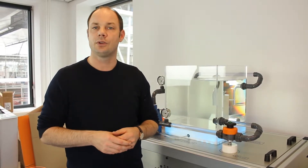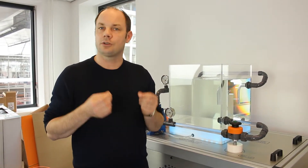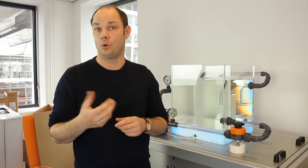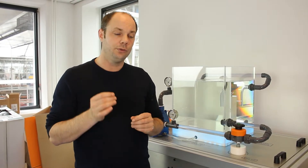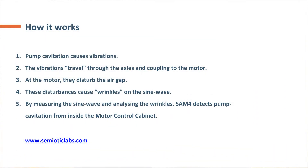The process is fairly straightforward. When cavitation is introduced, what starts to happen in the pump is it will start to vibrate in a markedly different manner than when it's operating in normal mode on the curve. In traditional solutions you pick up that vibration by installing a vibration sensor. However, that same vibration travels from the axle of the pump through the coupling to the axle of the motor. At the motor it will disturb the air gap that sits between the stator and the rotor. When you disturb that air gap it will introduce wrinkles on your sine wave. By measuring those wrinkles and by analyzing them, we can effectively detect cavitation using electrical waveform analysis.